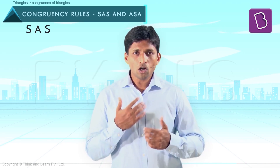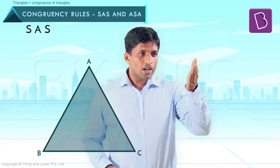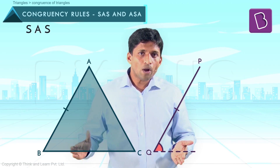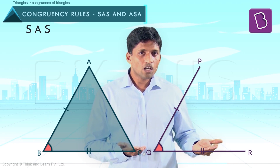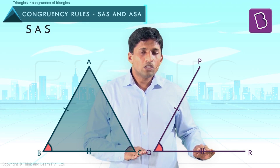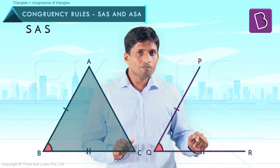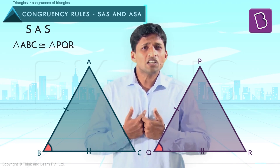It will look much simpler when we visualize through a diagram. Let's visualize SAS. Take triangle ABC. Now take PQ equal to AB, angle Q equal to angle B, and QR equal to BC. So two sides are equal, these two angles are equal, and these two sides are equal — that is side, included angle, and side. The only way to complete this triangle is by joining R to P, and that is the SAS rule for congruency.